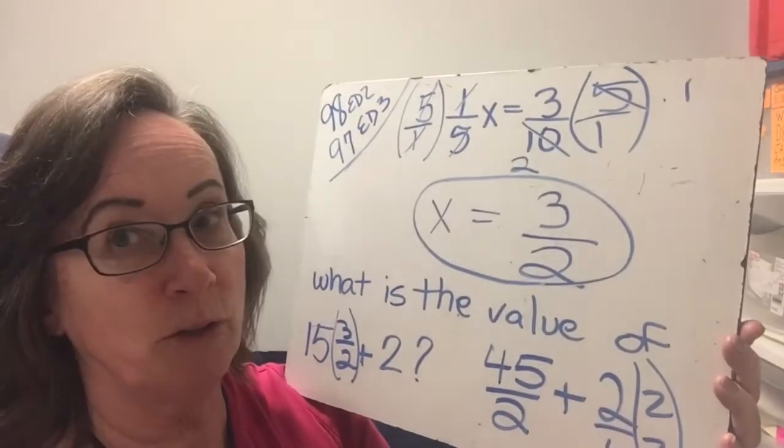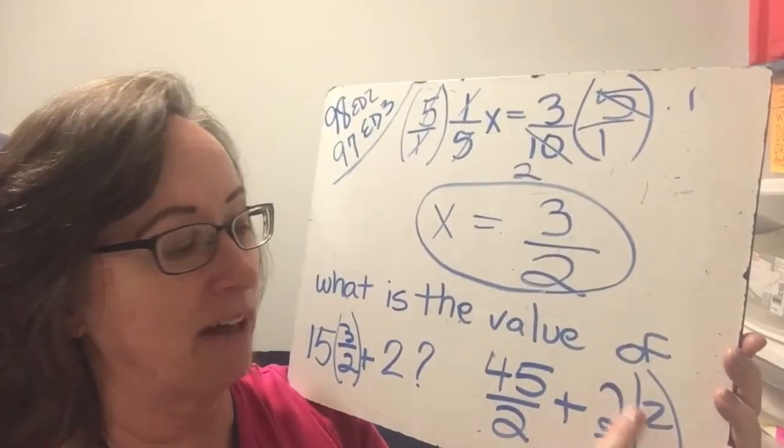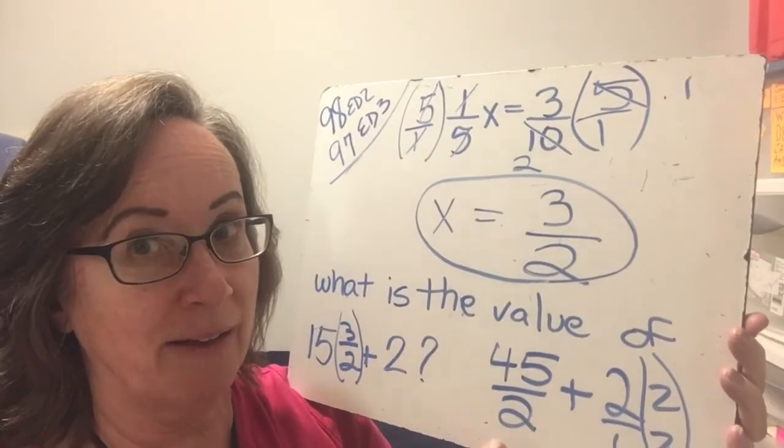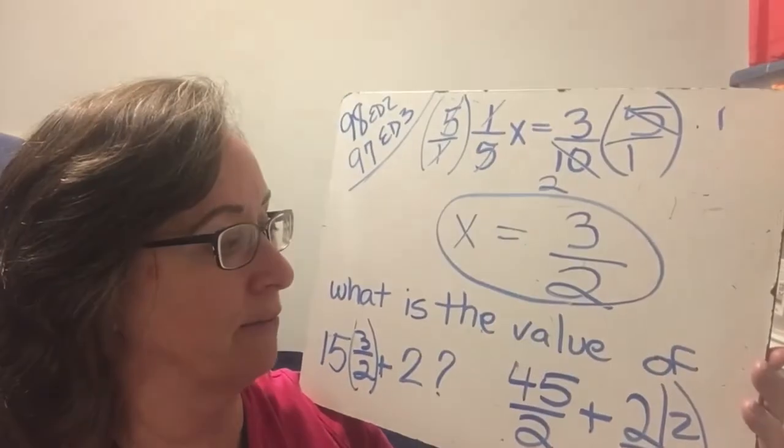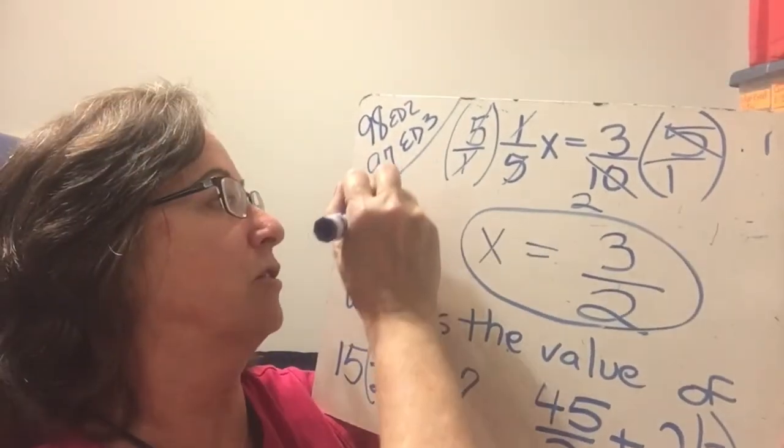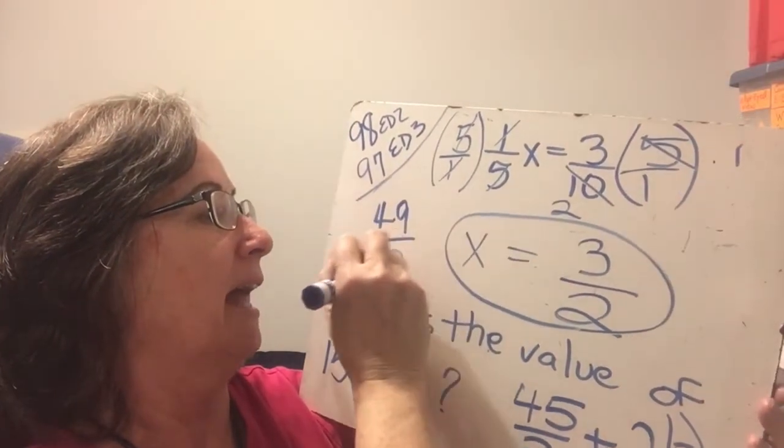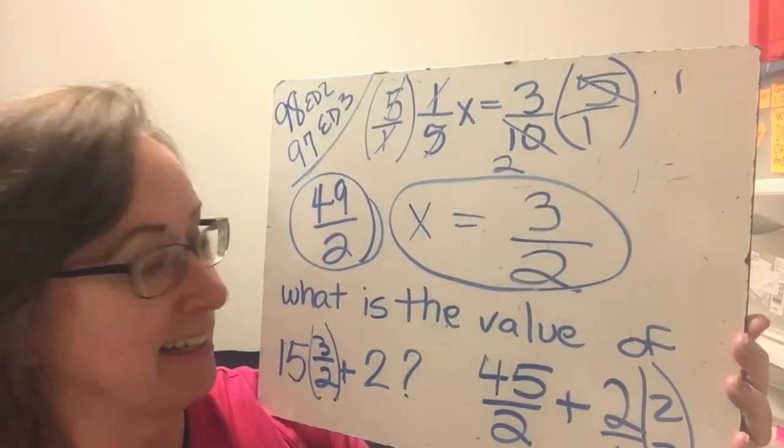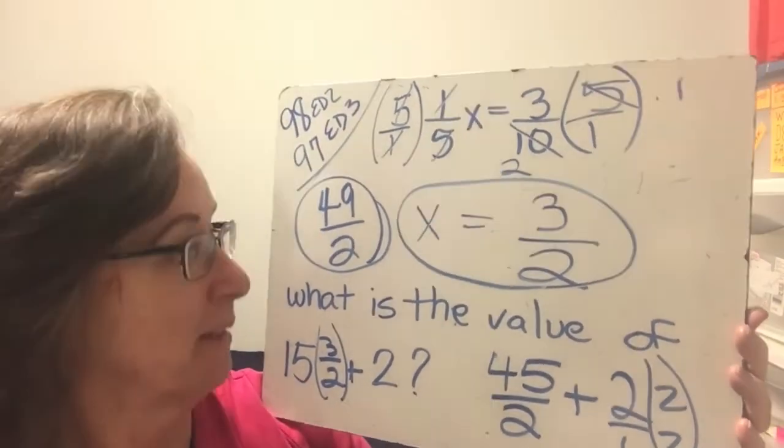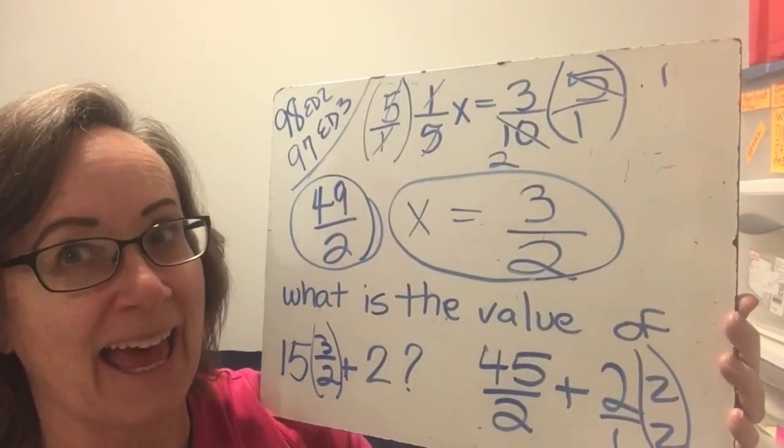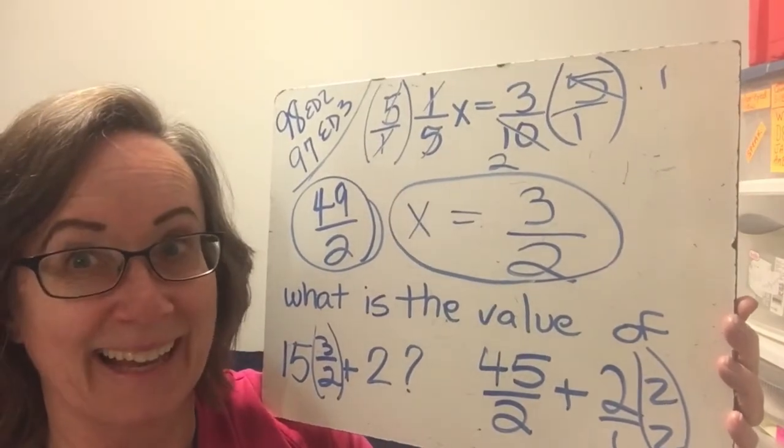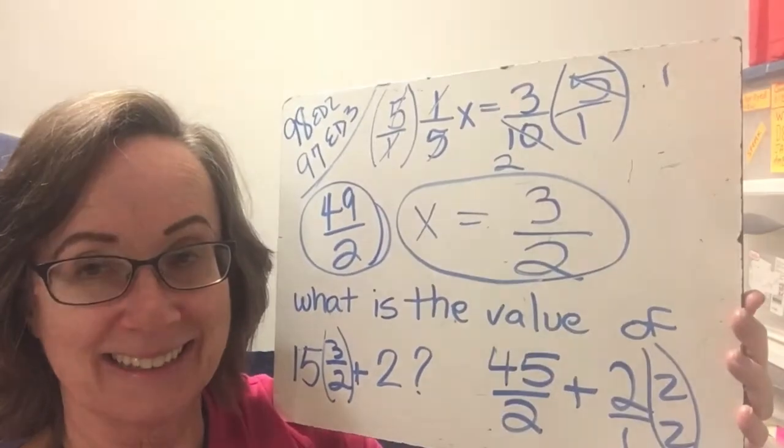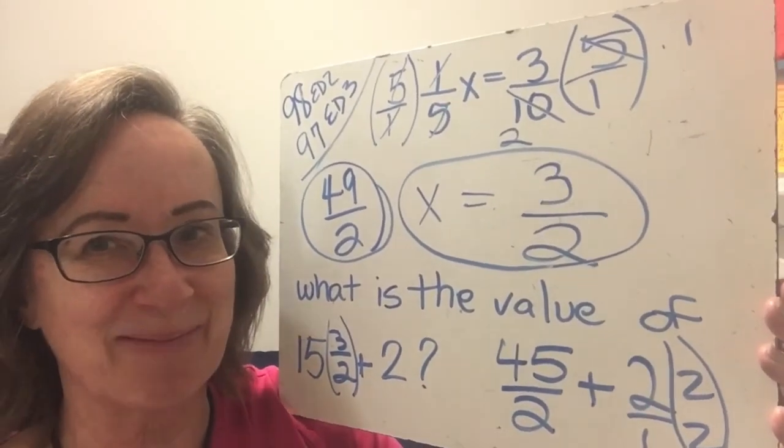So instead of 2 over 1, let's add 4 halves, which 45 halves plus 4 halves is going to lead us to 49 halves. So the answer to your last practice problem was 49 halves. And we are done with lesson 98. And this is Mrs. A. And may God bless your day.